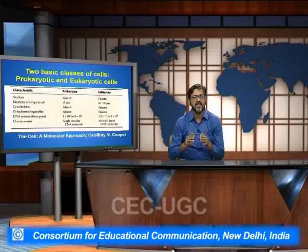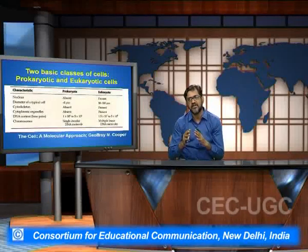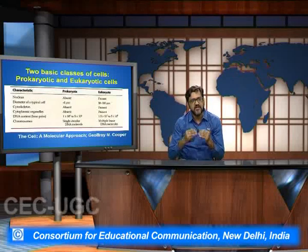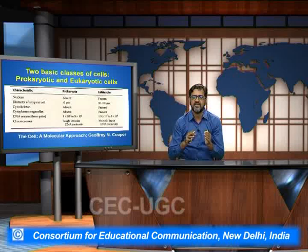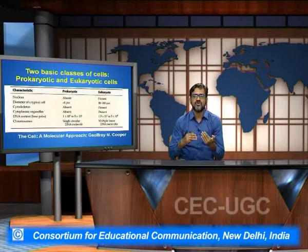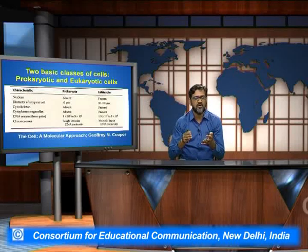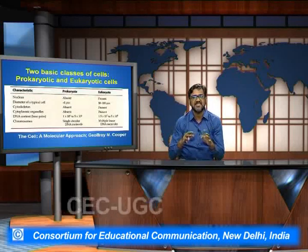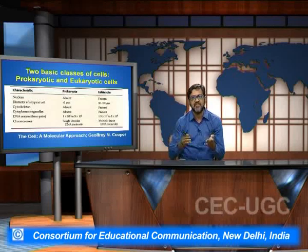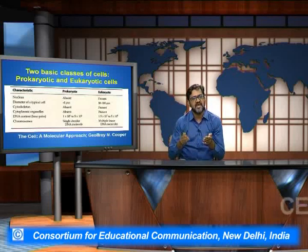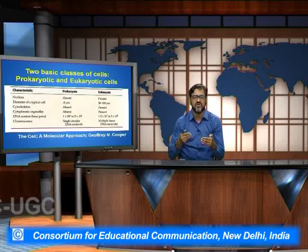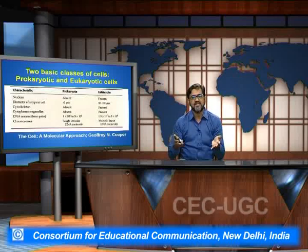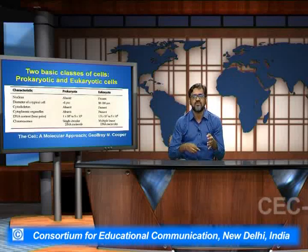Cytoplasmic organelles are absent in the prokaryote but present in the eukaryotic system. The DNA content in the eukaryote is much higher than in the prokaryotic system. The DNA in prokaryotes is a single circular DNA structure, but in eukaryotes the DNA molecules are coiled onto histone molecules and subsequently coiled further to form compact structures known as chromosomal structures.